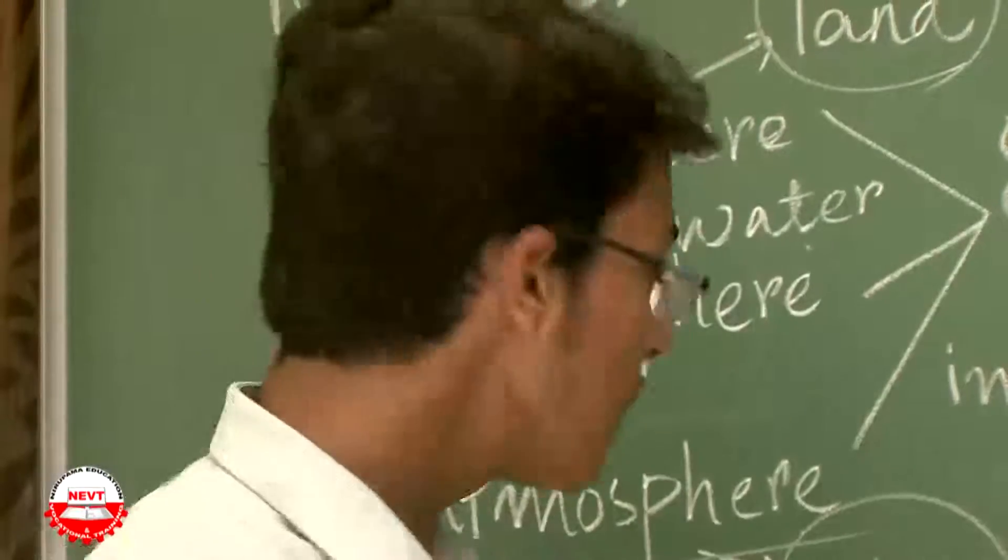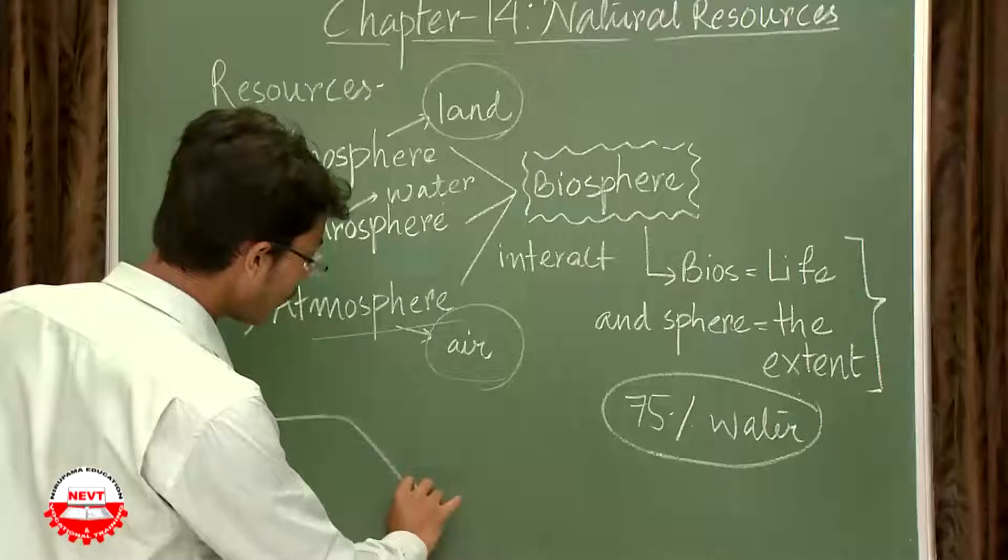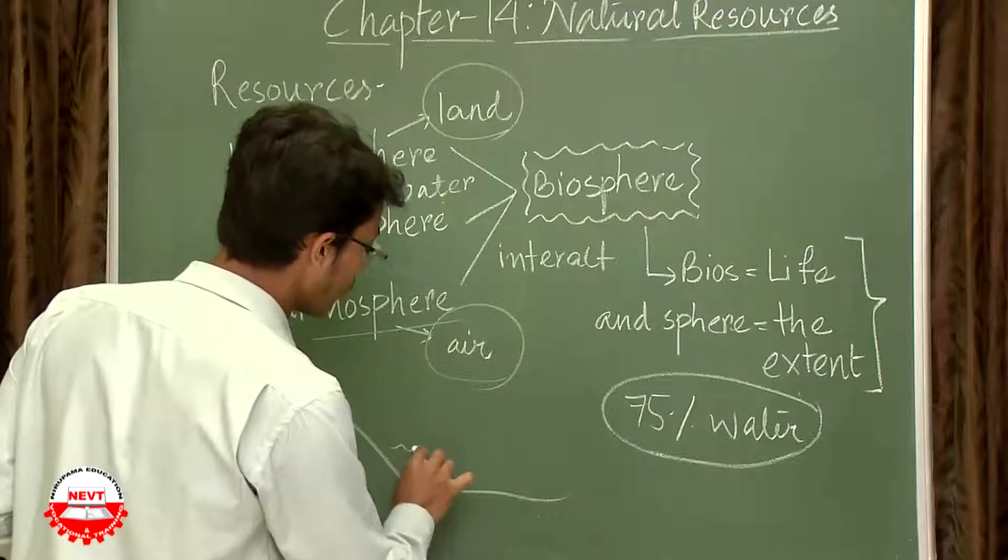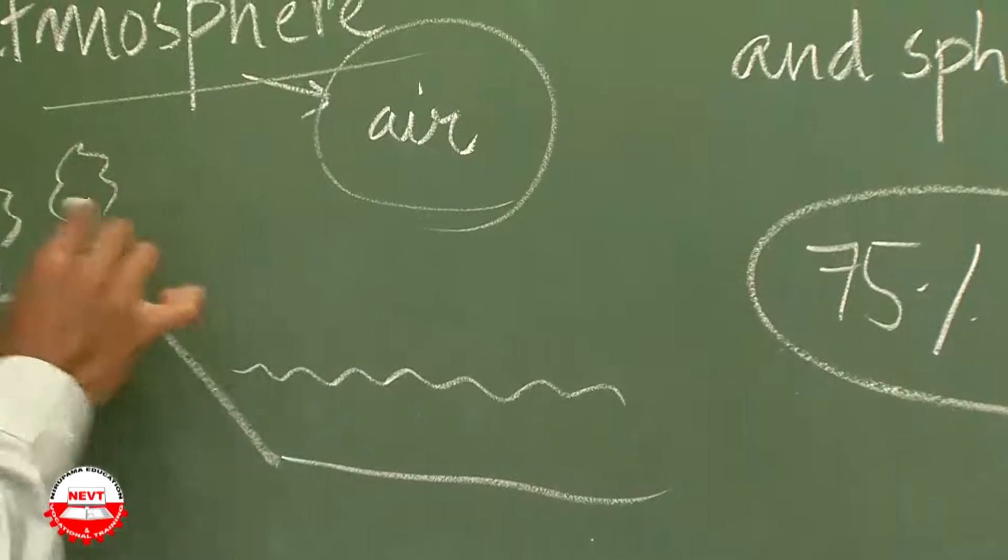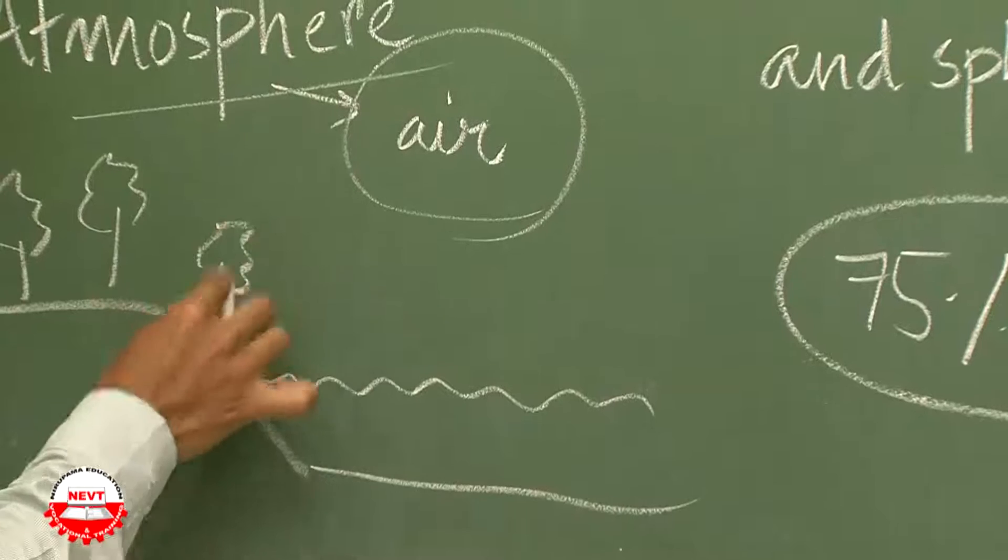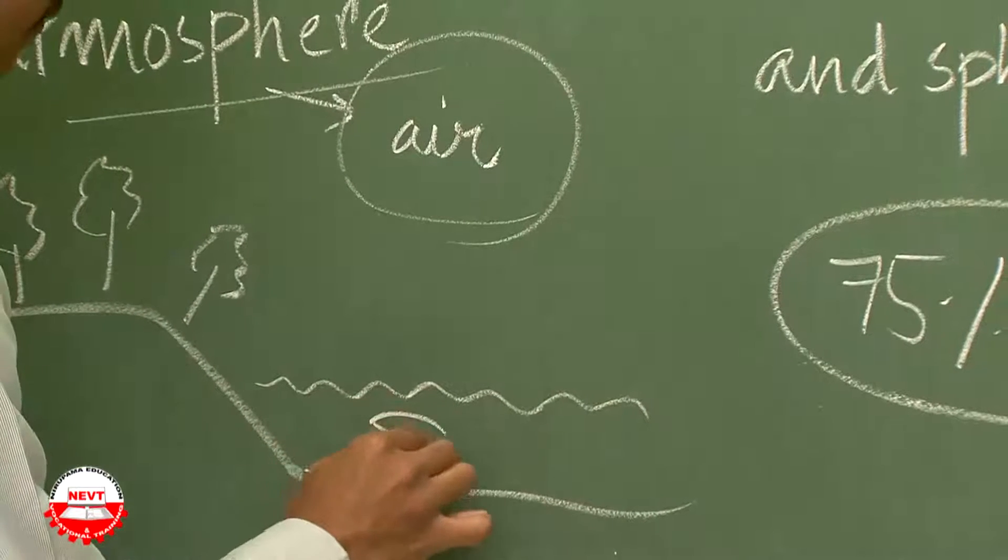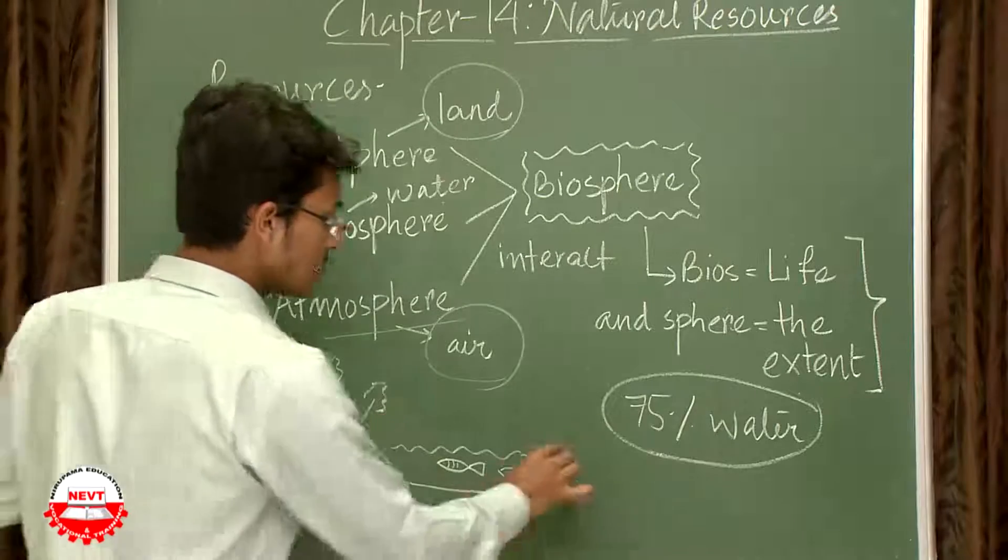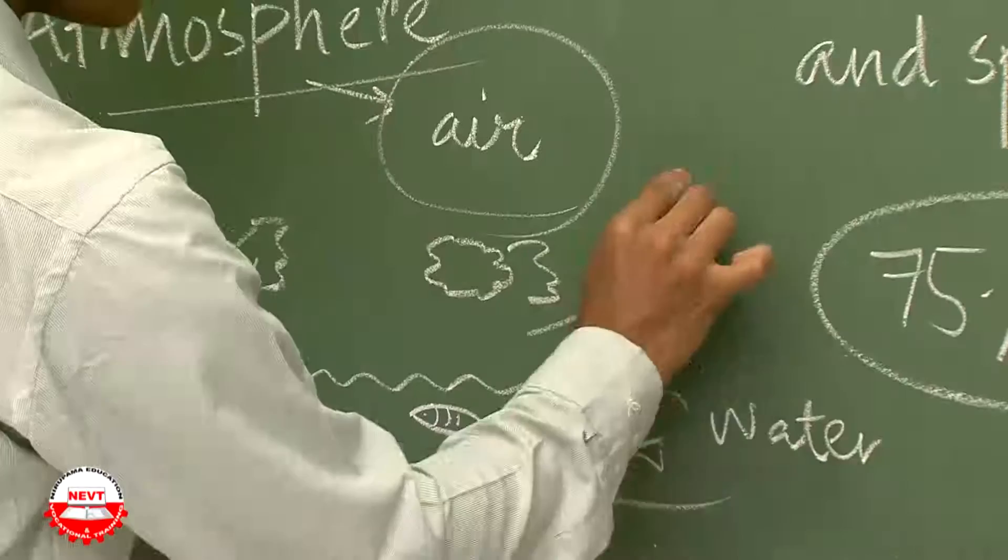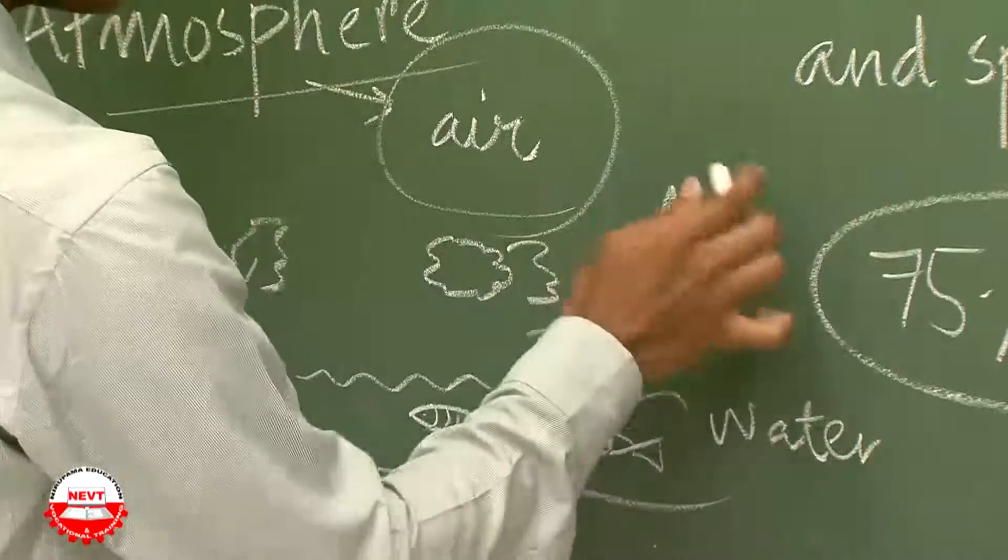Now what is this very connotation of biosphere? See, this is a landform and here there is water, and here there is water, and here there are some trees, here there are some fishes. So this is land, this is water, this is air, these are all clouds.